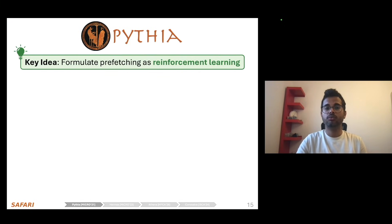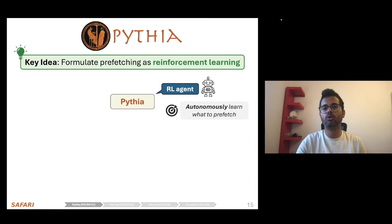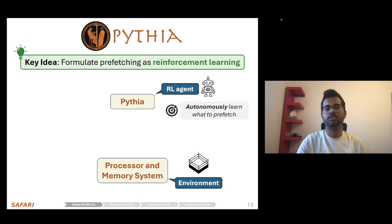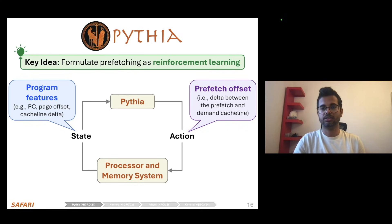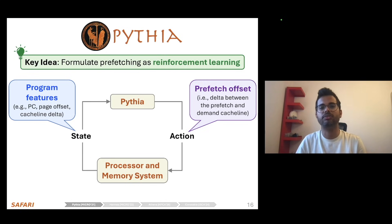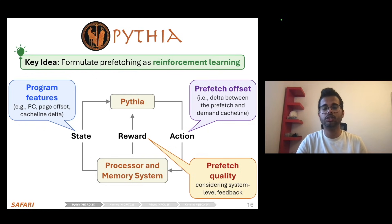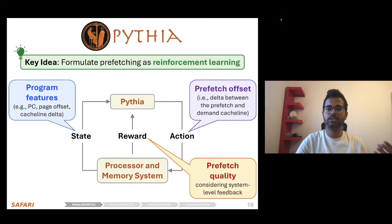Towards this, we propose Pythia, which formulates prefetching as a reinforcement learning problem. Pythia acts as the RL agent whose goal is to autonomously learn what to prefetch by interacting with its environment — the processor and memory subsystem. For every demand request Pythia observes, it extracts a set of program feature information and uses it to take a prefetch action: selecting a prefetch offset, which it adds to the current demand cache line address to generate a new prefetch request. Pythia also receives a numerical reward from the environment evaluating the quality of the prefetch under various system-level feedback, such as memory bandwidth usage.